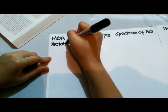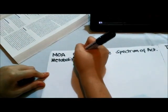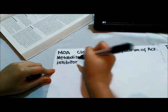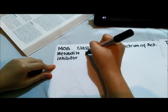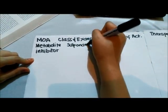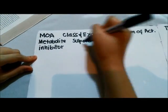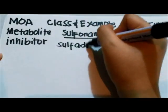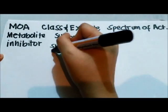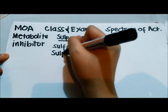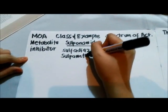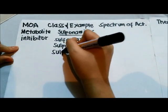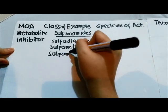We will be talking about sulfonamides. They function like metabolite inhibitors. Examples of these antibiotics are sulfadiazine, sulfamethoxazole, and sulfathiazole. The most important property of these antibiotics is that they do not affect human cells.